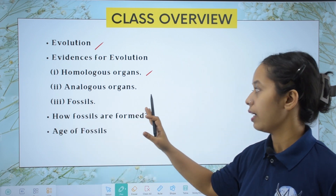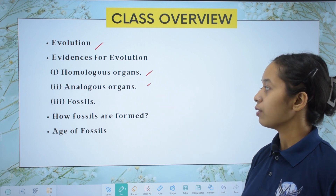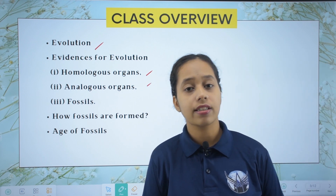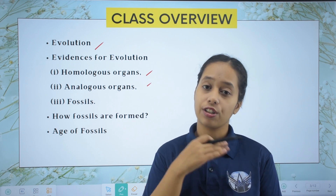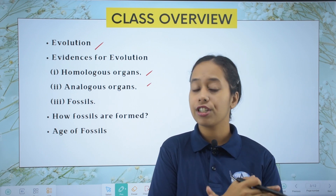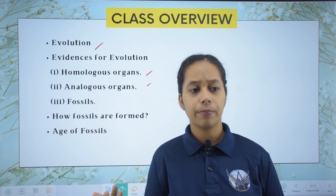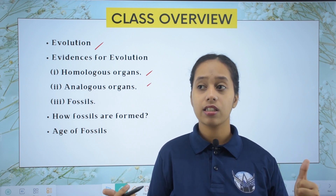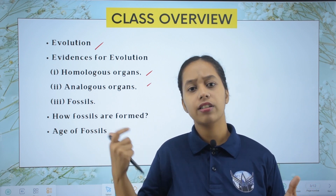Then we need to study analogous organs. Analogous organs are those organs whose basic structure is not the same, but their basic functions are the same. For example, the wings of bats and the wings of birds.